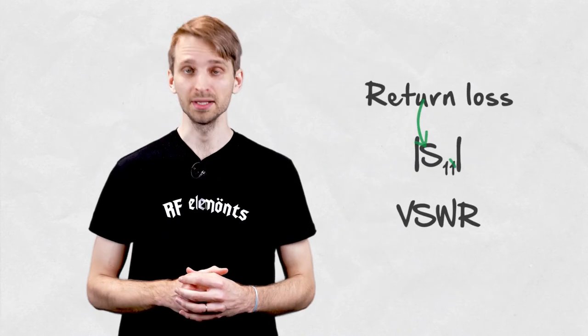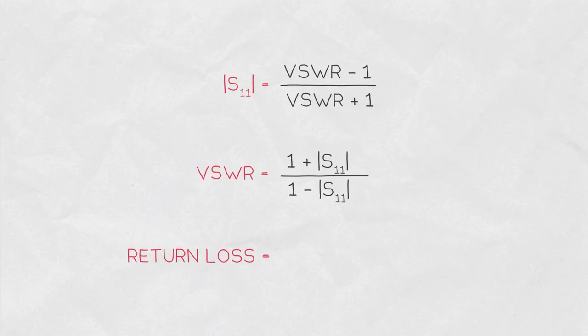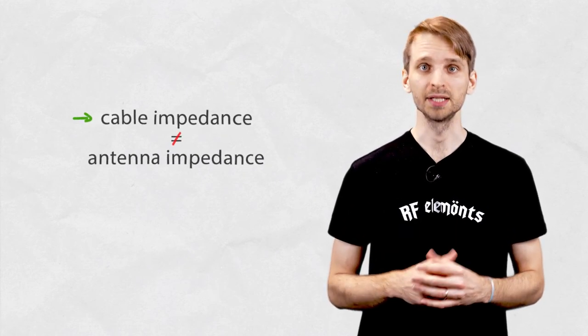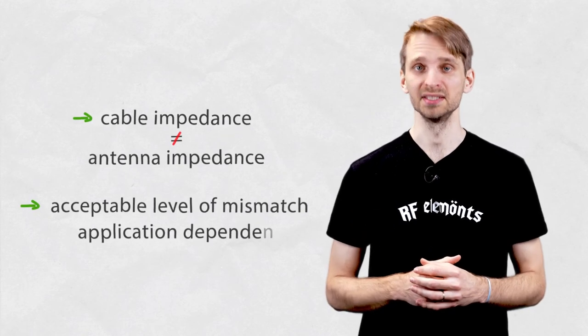These parameters relate to each other through simple equations. S11 can be described in terms of VSWR and vice versa. The return loss is equal to minus S11. The impedance of the antenna and the cable are never exactly equal and it only depends on the real world application how much of a reflection is acceptable.